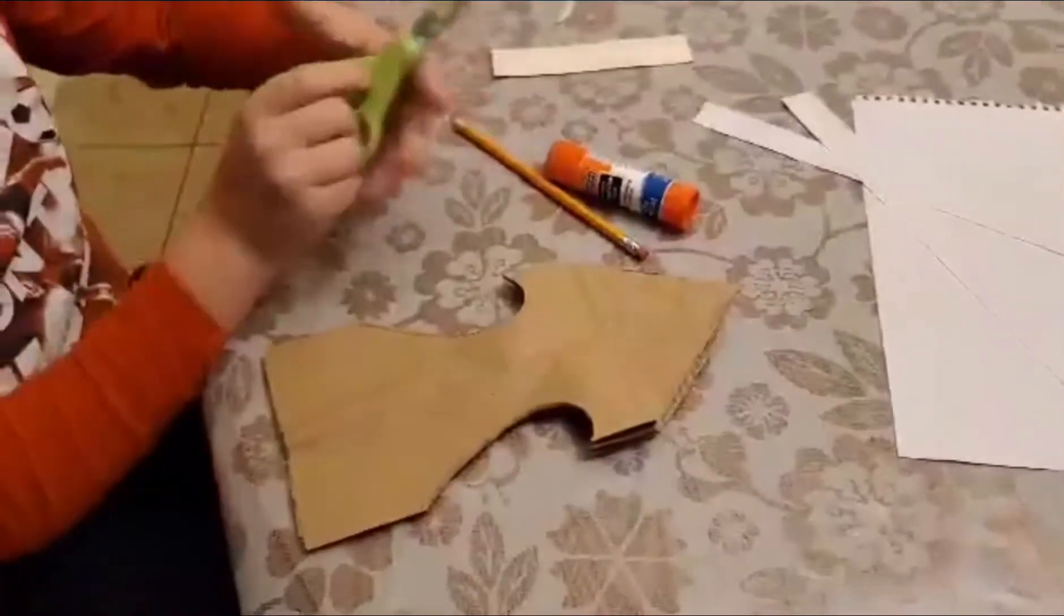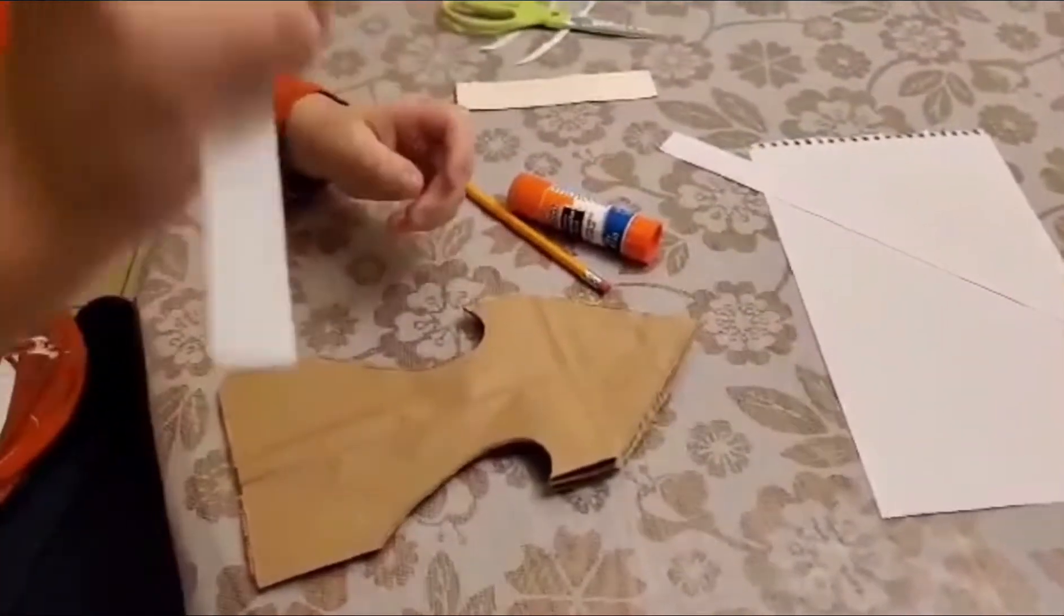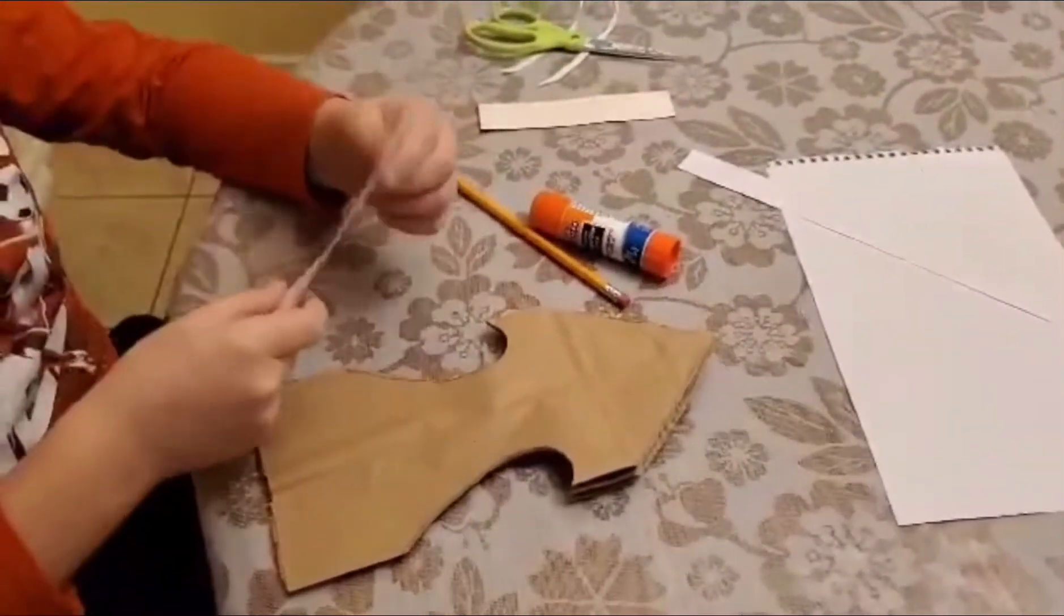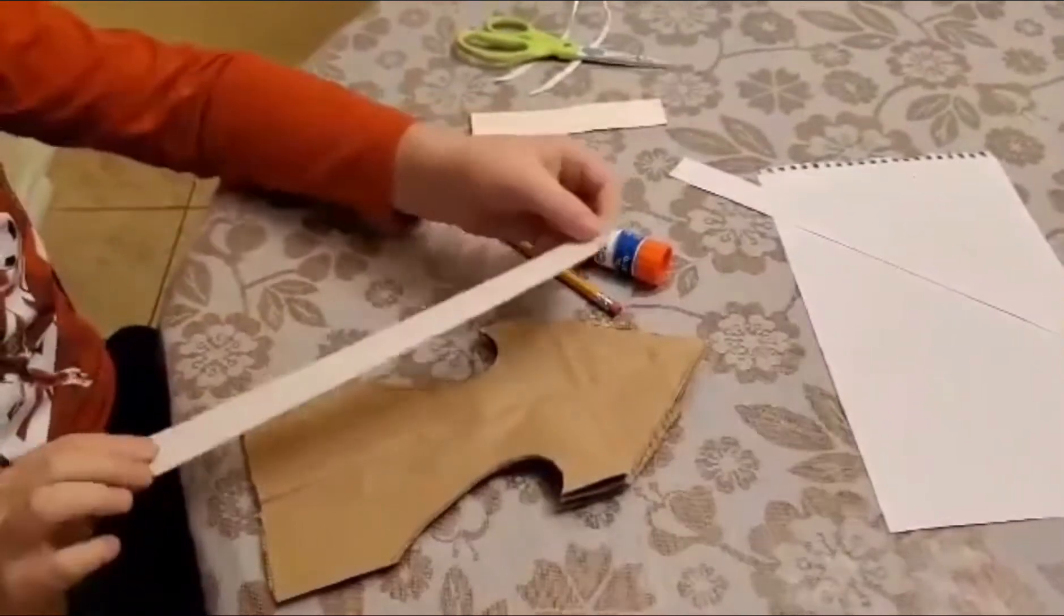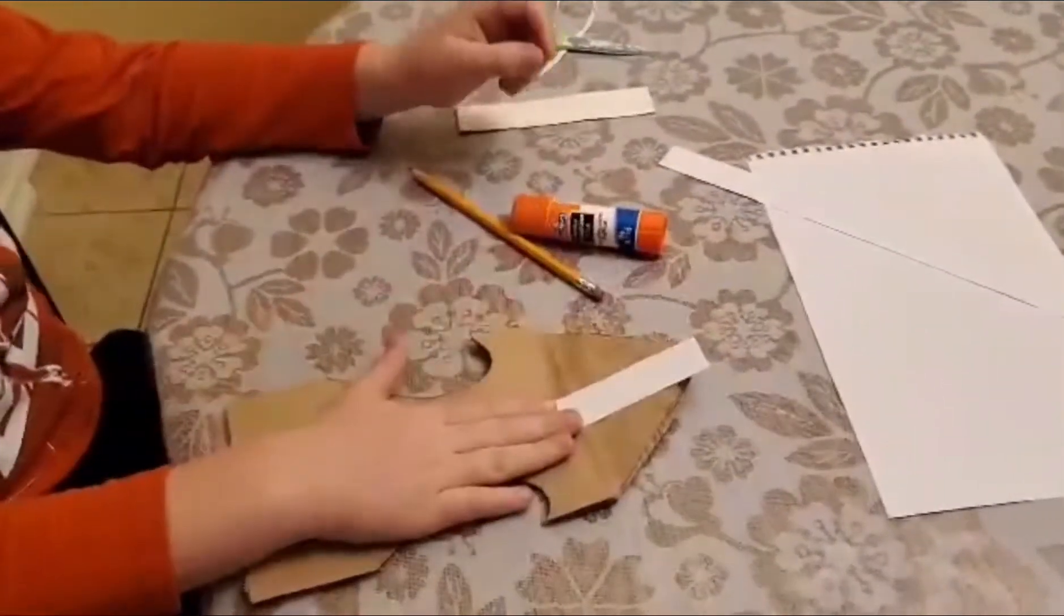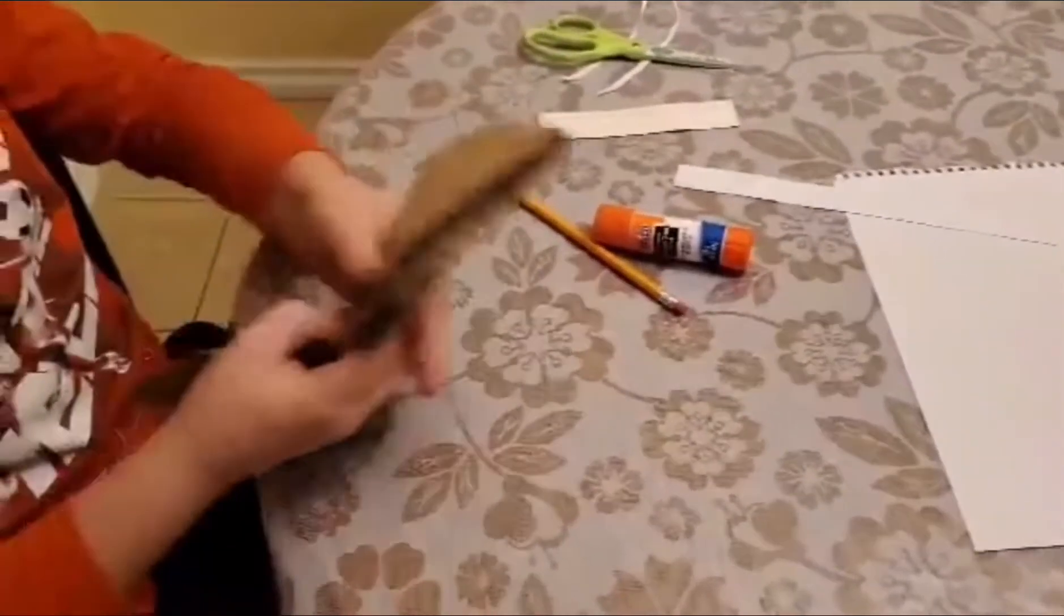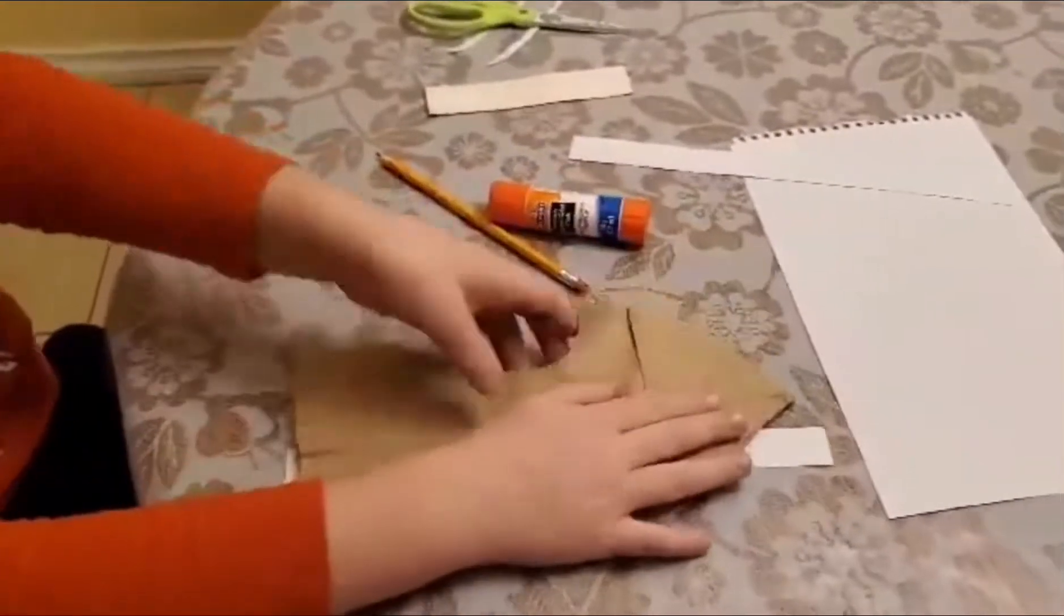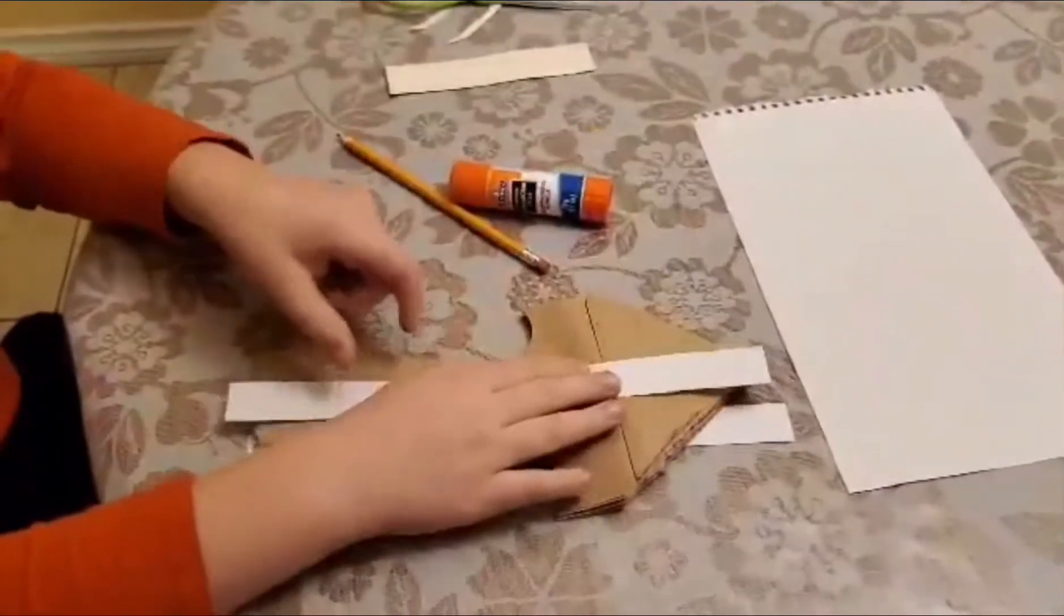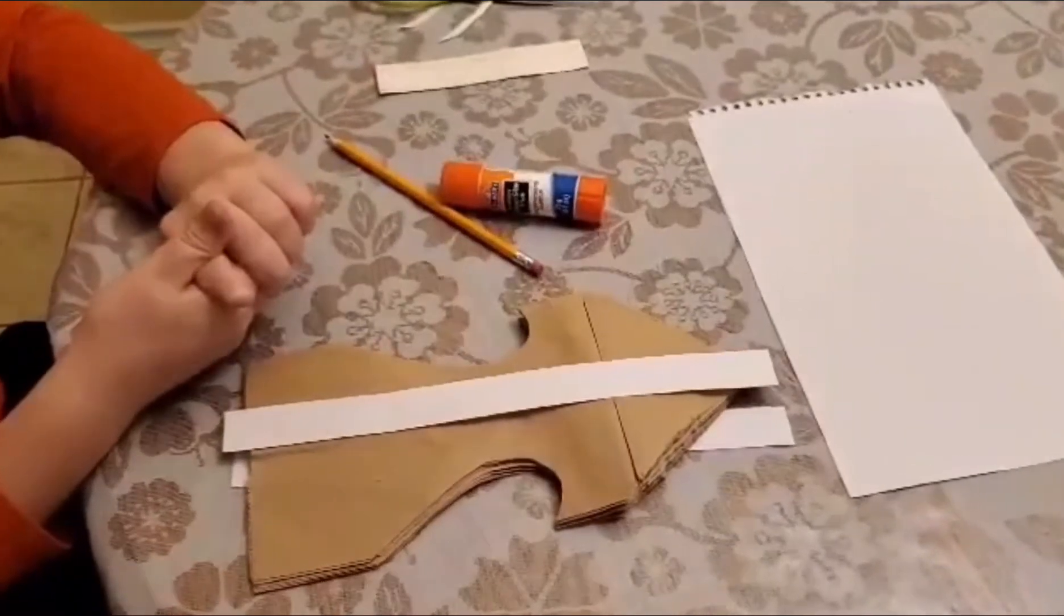And then after that, you need like a strip, a line of paper, white paper or whatever type of paper. And then you put it through the middle of that one. Then you flip it over and put it on this side, and then you glue it.